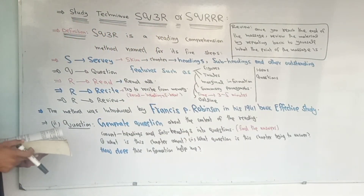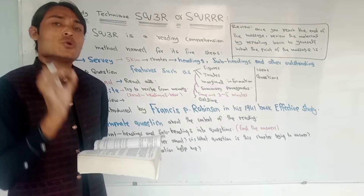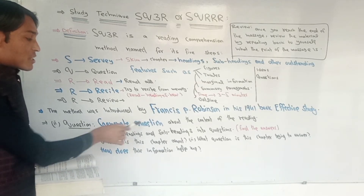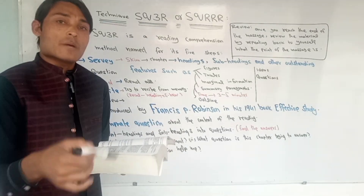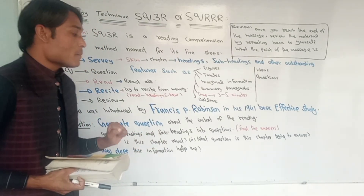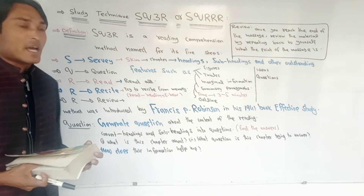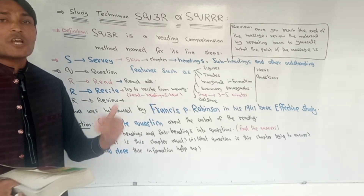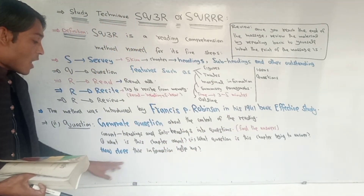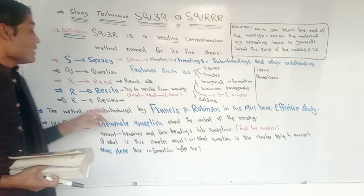The next step is Q, which stands for Question. In whichever unit you are reading, you generate questions. The meaning of Question is to generate questions based on the content you have read. For example, whatever headings and sub-headings you have, you convert them into questions, and then you find out the answers to those questions.